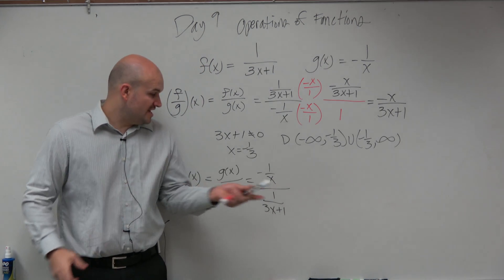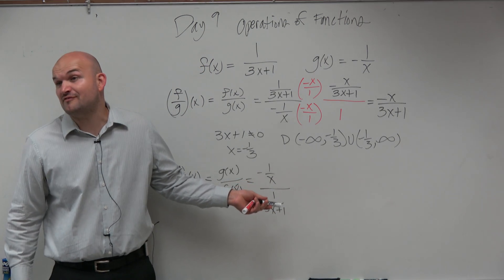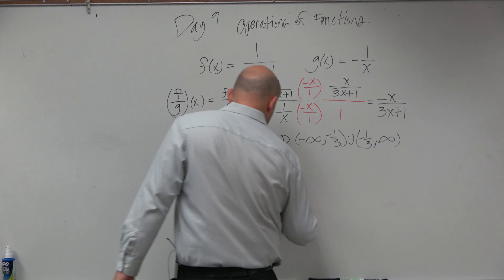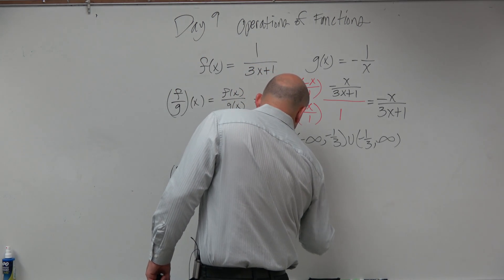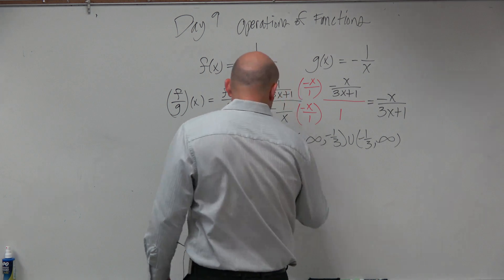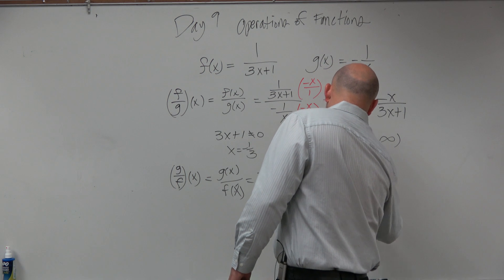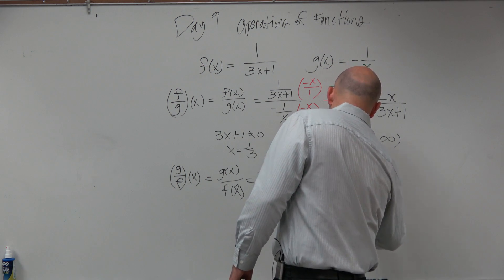And again, we're going to do the same process. We have a fraction in the denominator. Get rid of fraction in the denominator, multiply by the reciprocal. So 3x plus 1 over 1, 3x plus 1 over 1, that just equals negative 3x plus 1 over x.